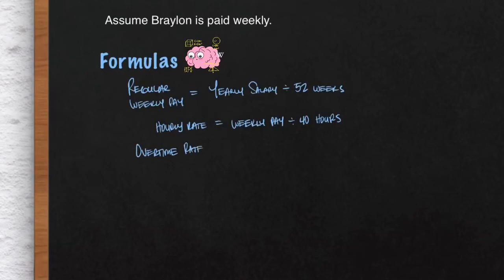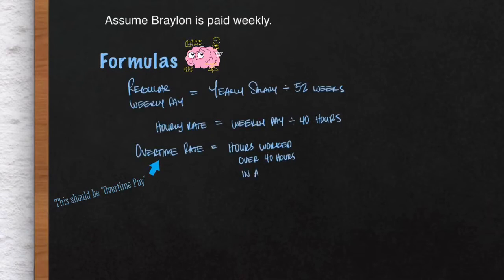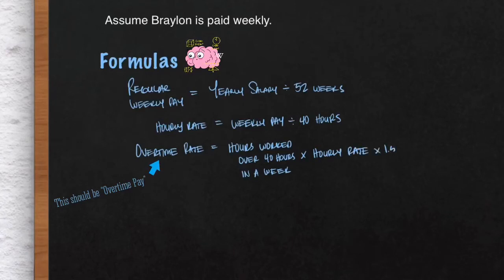His overtime pay will equal hours worked over 40 hours in one week. Any hours worked over 40 hours is going to be considered overtime hours in a week, because he gets paid weekly. Next, you're going to multiply that by his hourly rate and then multiply that by 1.5. That will give you your overtime pay.